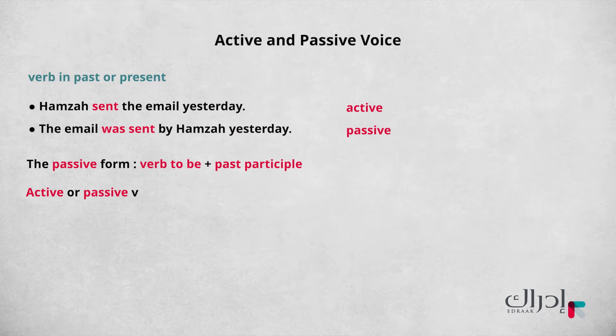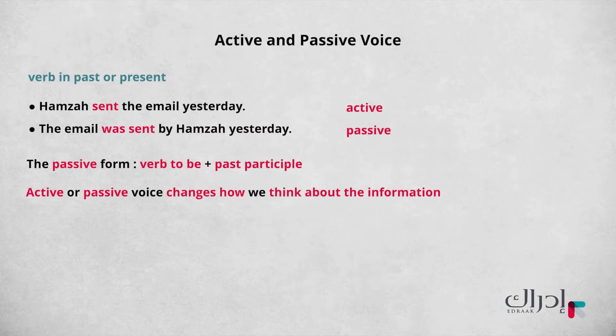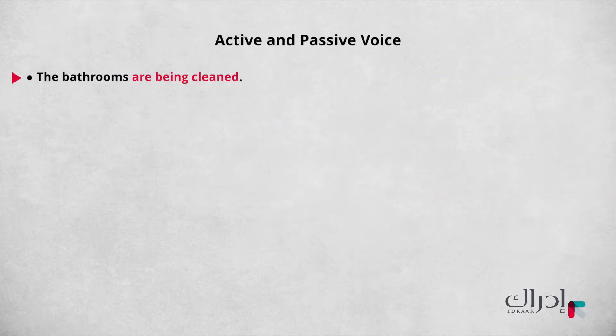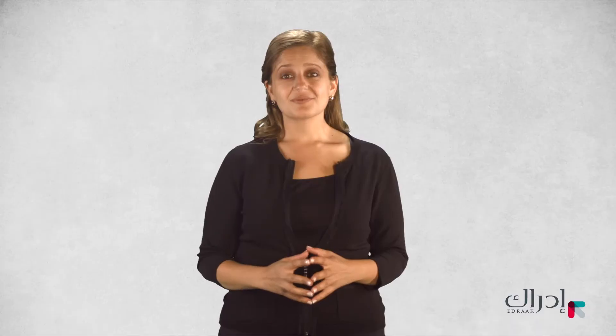Well, active or passive voice changes how we think about the information. Let's say the main focus of the sentence is to show that the email was sent — it does not matter who. So in this case, we are showing that the action happened or is happening, and who did it isn't what's important. For example: 'The bathrooms are being cleaned' or 'The security system is being installed.' In these examples, the main focus is the action itself, not the subject or who did it.